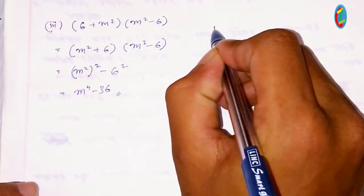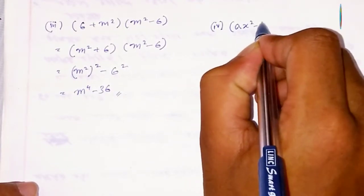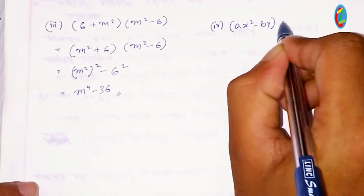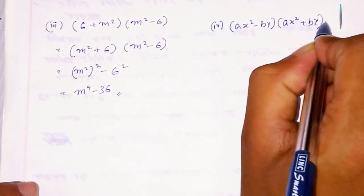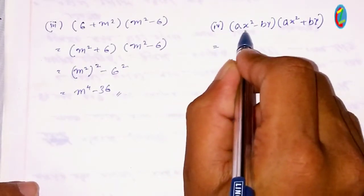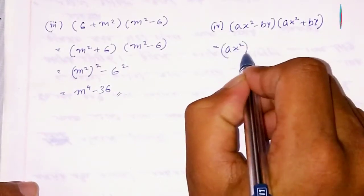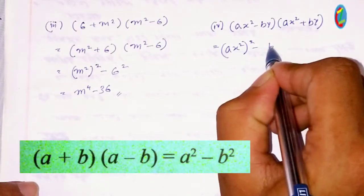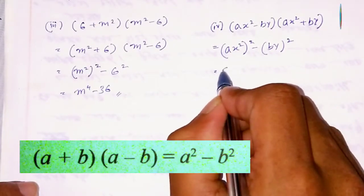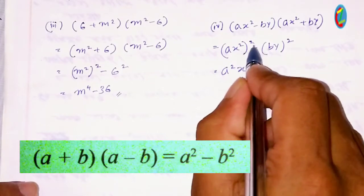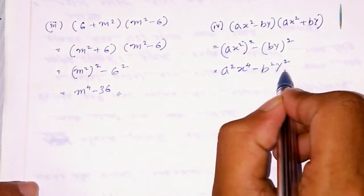The answer is (ax² - by)(ax² + by). This equals (ax²)² minus (by)². So ax² squared gives a²x⁴, and by squared gives b²y². The ultimate answer will be a²x⁴ minus b²y².